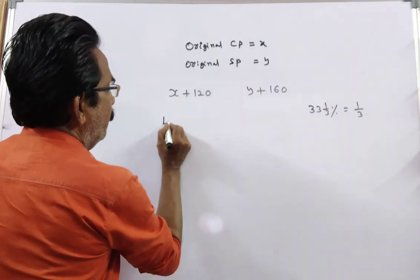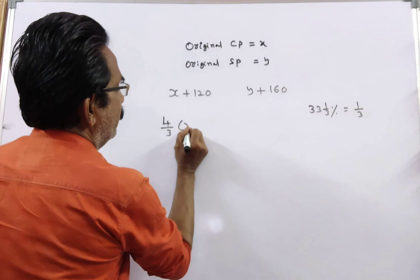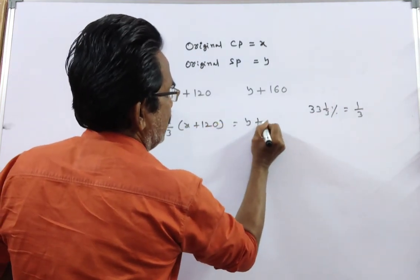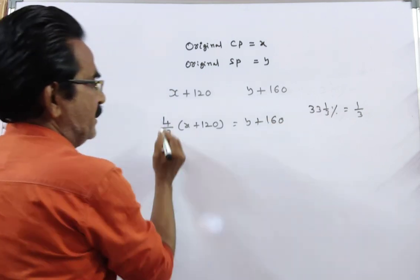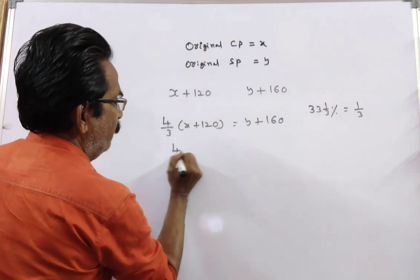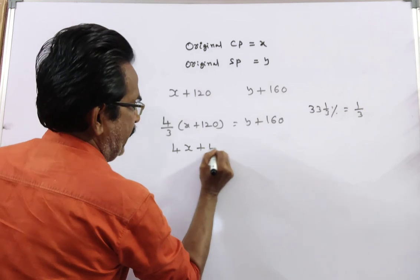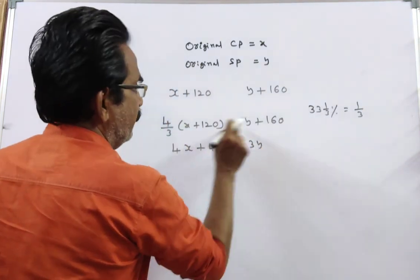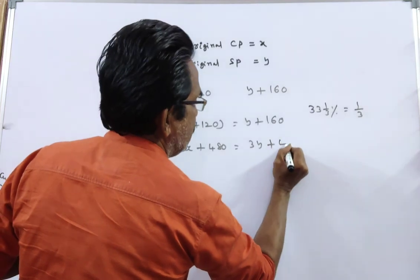See, 4 by 3 of X plus 120 is equal to Y plus 160. It implies 4X plus 480. 4X plus 480 is equal to 3Y plus 480.